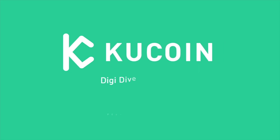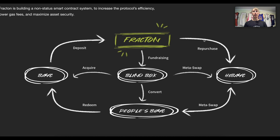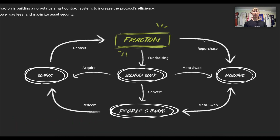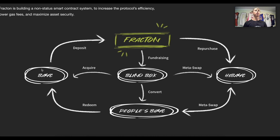If you'd like to get started trading with the FT token, links are in the description below so you can get 20% off trading fees. The brief summary on Fractin Protocol is that there are three tokens involved in this process. The first token is the ERC-721 — this is your actual NFT. It could be your CryptoPunk, your Bored Ape, or your Fidenza — these are the different NFTs on the Ethereum blockchain, typically the blue chip ones.